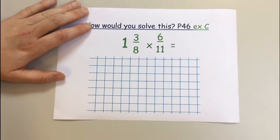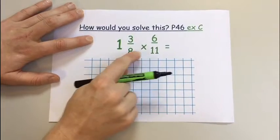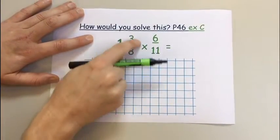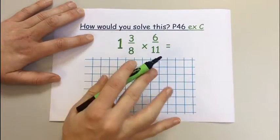Exercise C extends to this skill of taking a mixed number fraction multiplied by a proper fraction. The simple task is we need to turn this mixed number fraction into an improper fraction first.